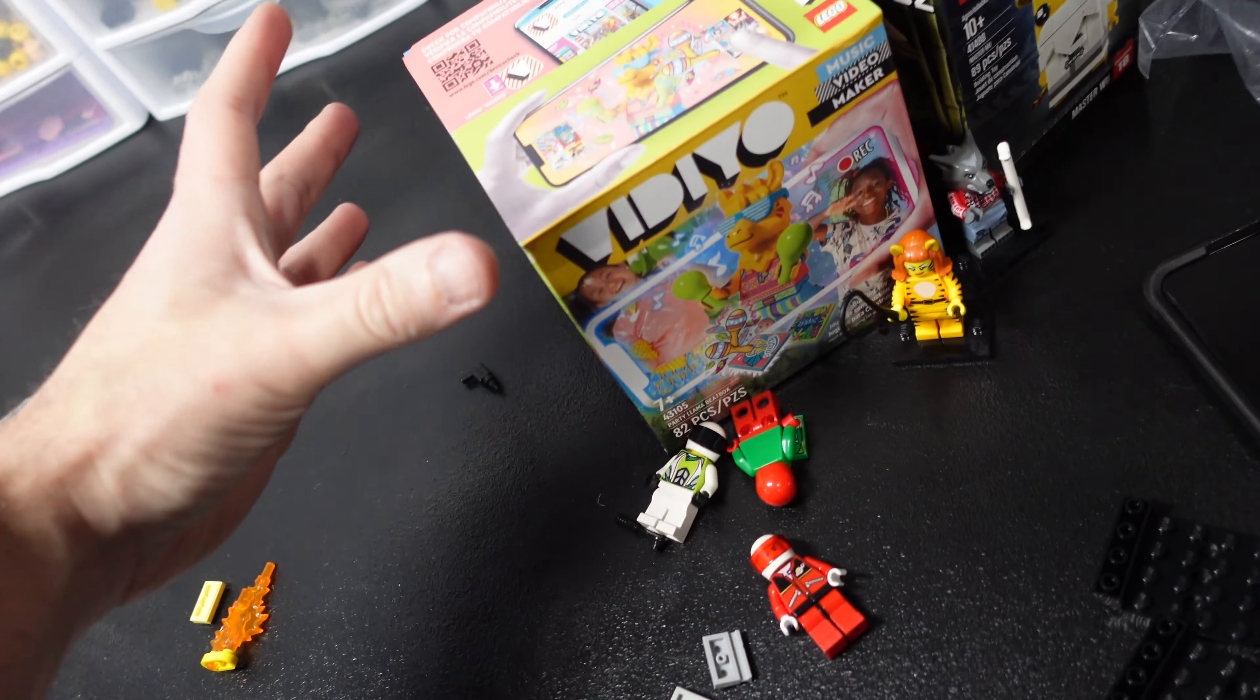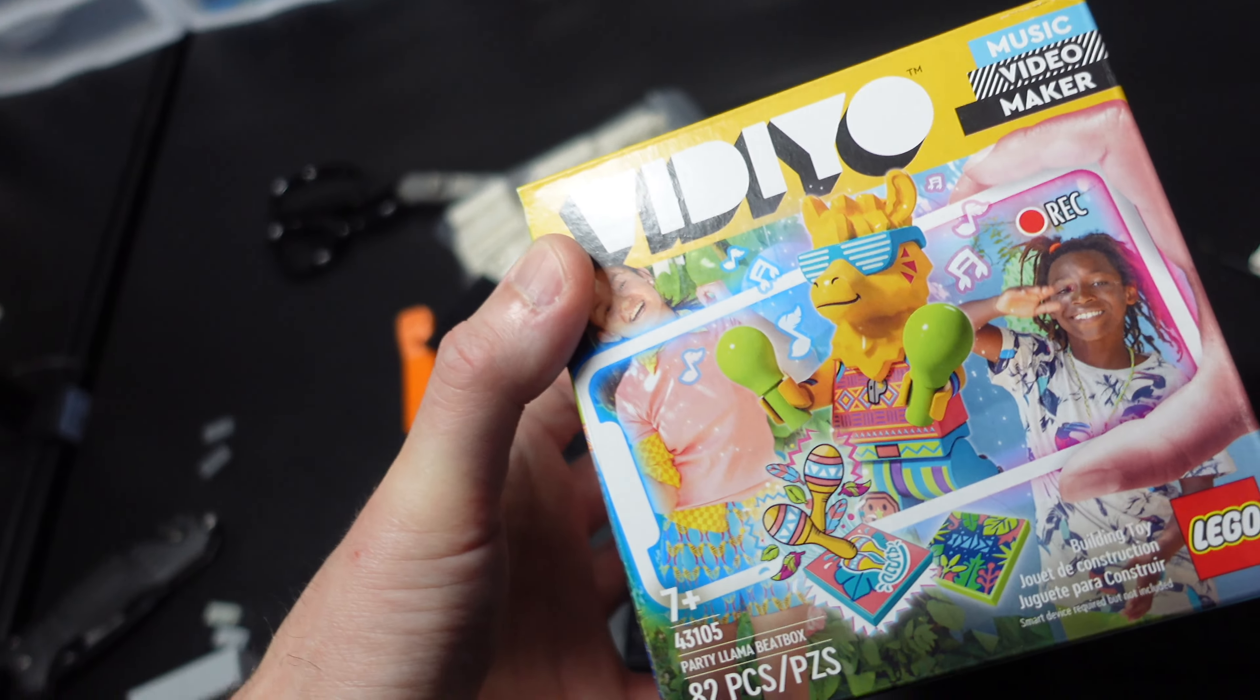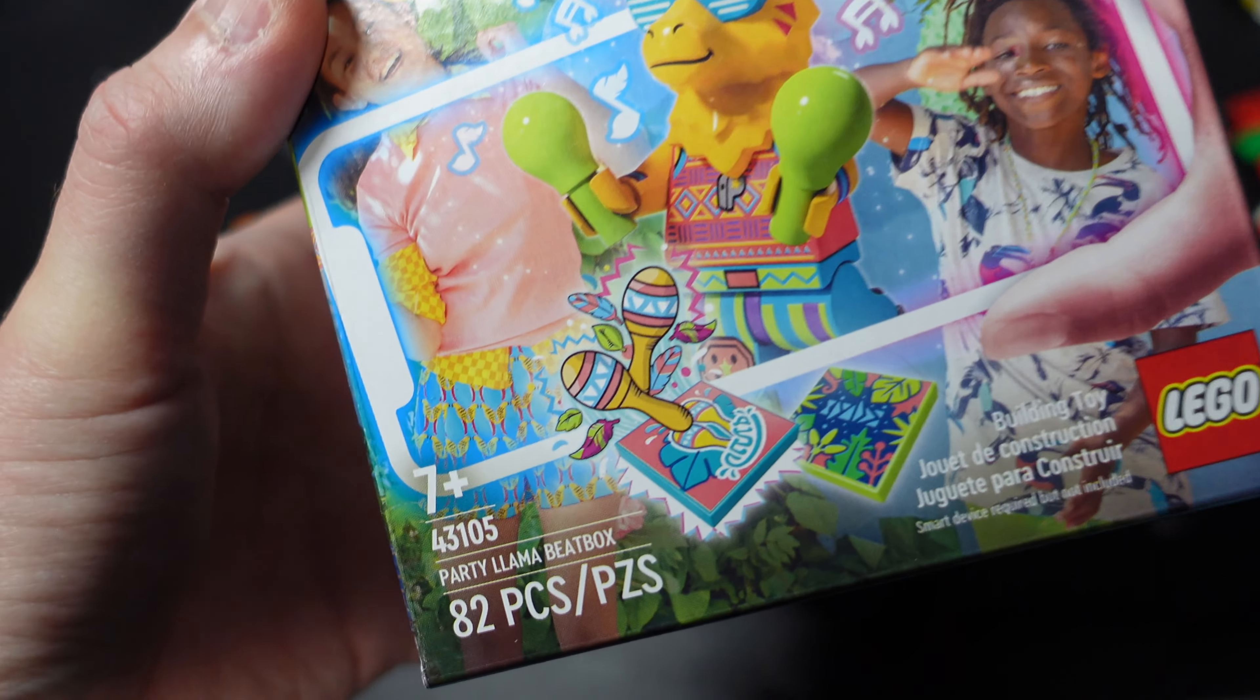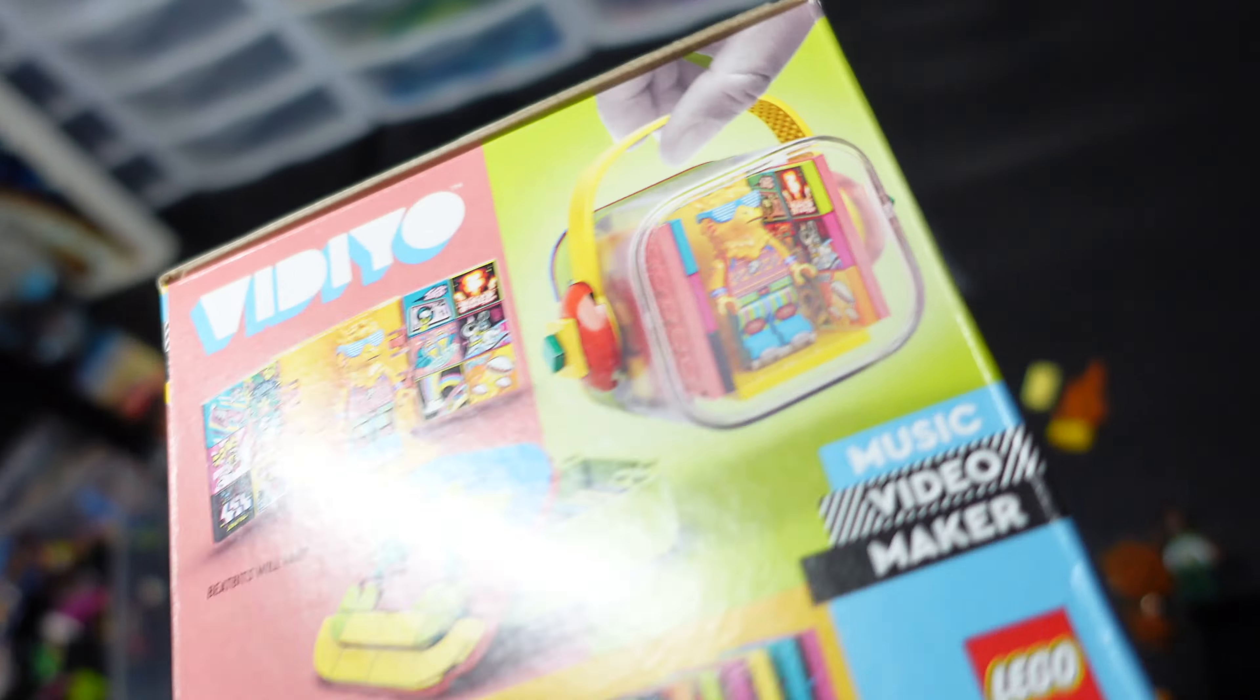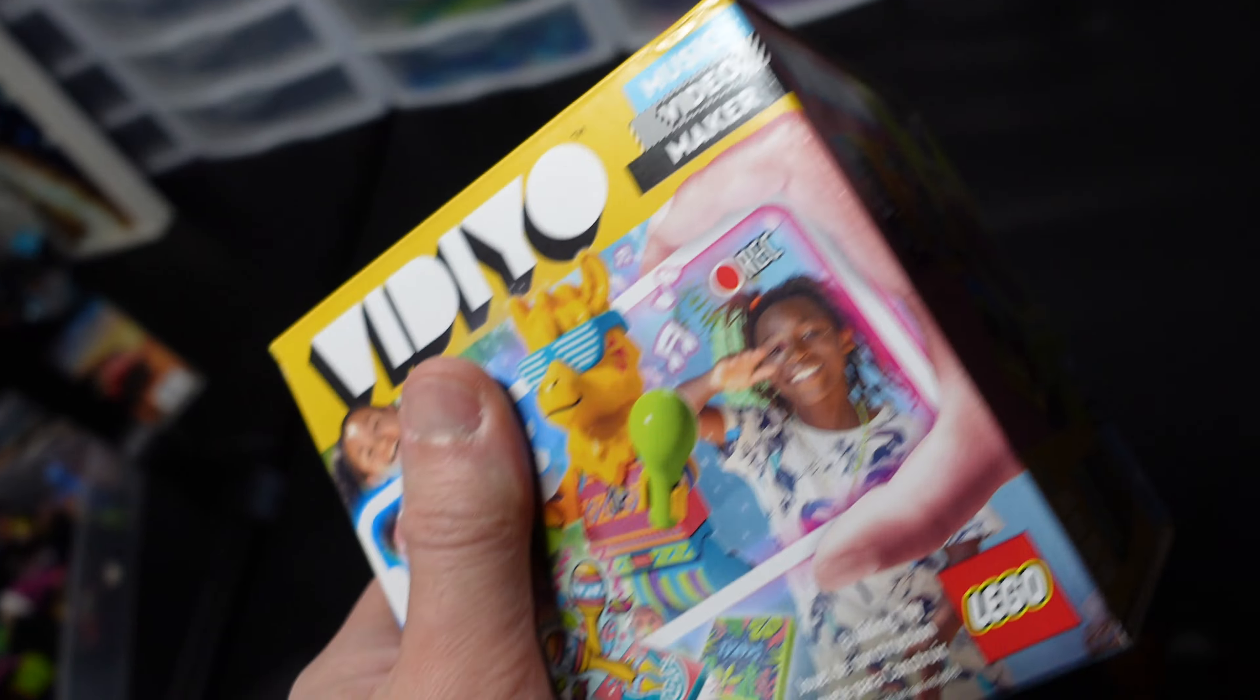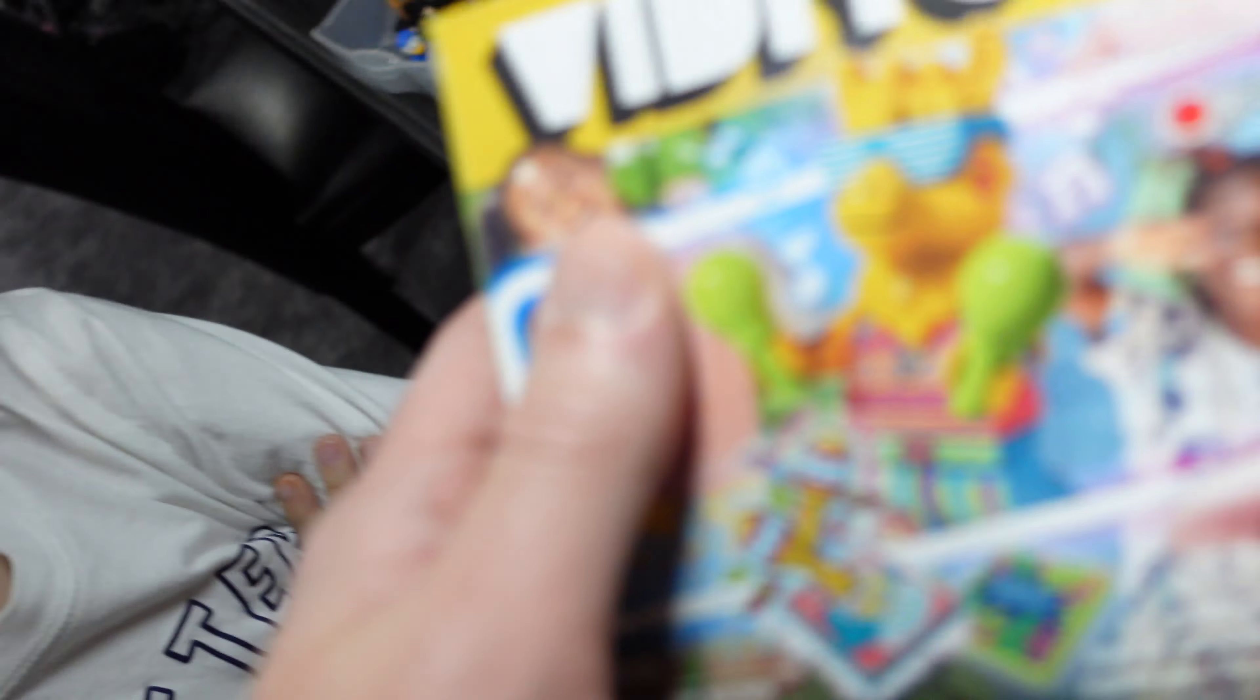But today's video is going to be about this lovely set right here. This, of course, is LEGO Vidiyo Set 43105 Party Llama Beatbox, 82 pieces. Got this for $3 from Ronnie. I'm not entirely sure what to expect from this, but I thought it'd be fun to find out in this video with you guys.